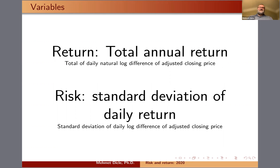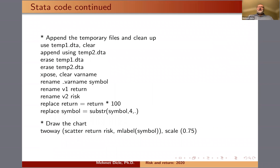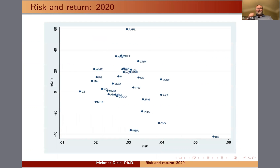This is the data code — it's actually two pages. You first download the data using Fetch with air quotes and install it to your Stata. Then you can calculate total returns and then calculate the risk. You need to append and reshape and then draw the chart. I use a scale of 0.75, and this is how the data looks.